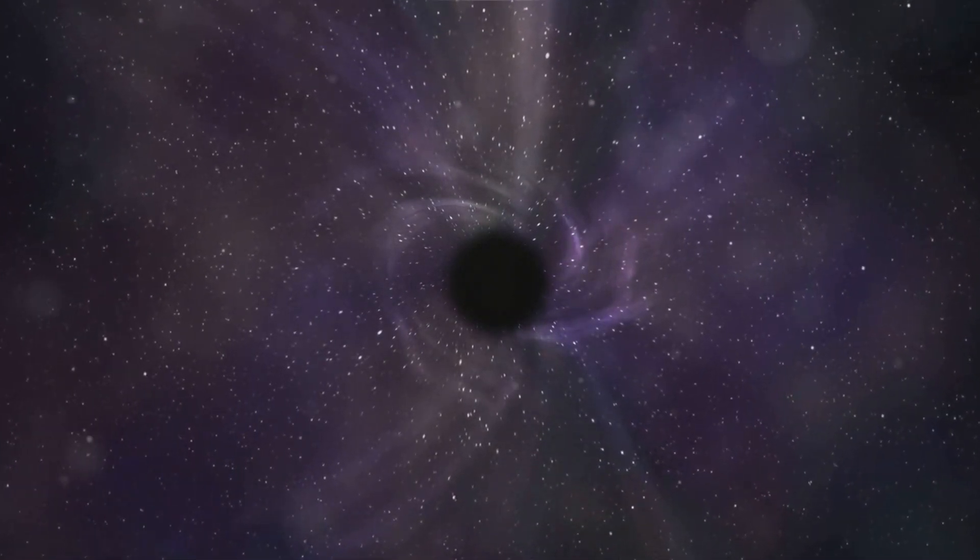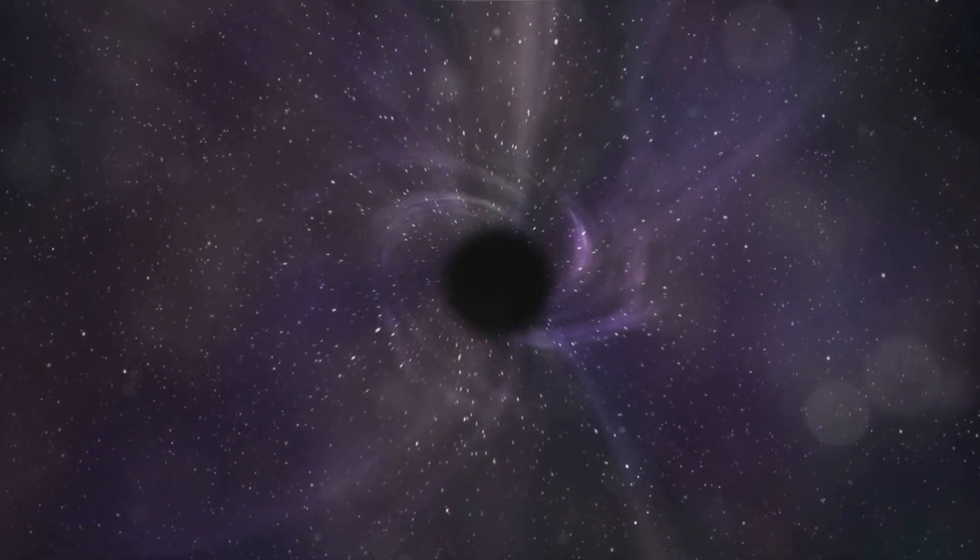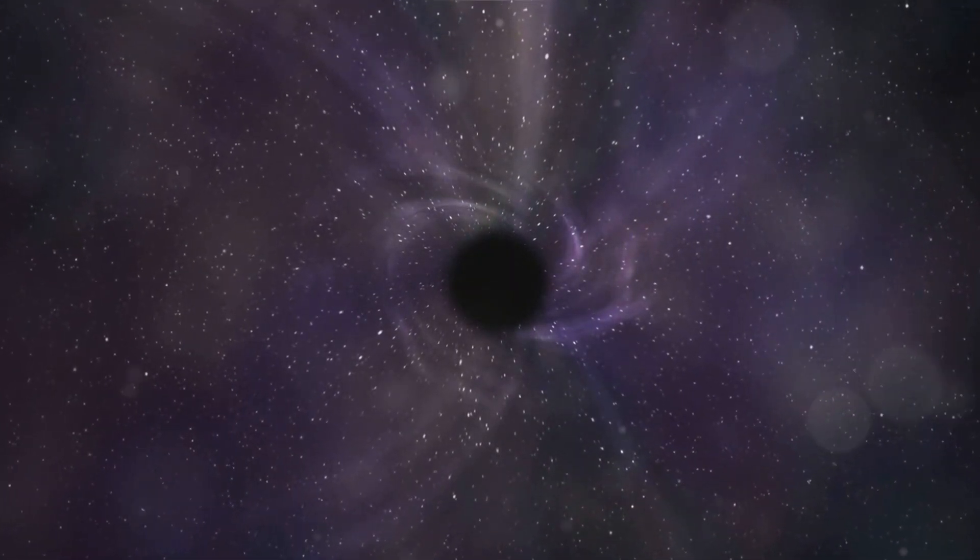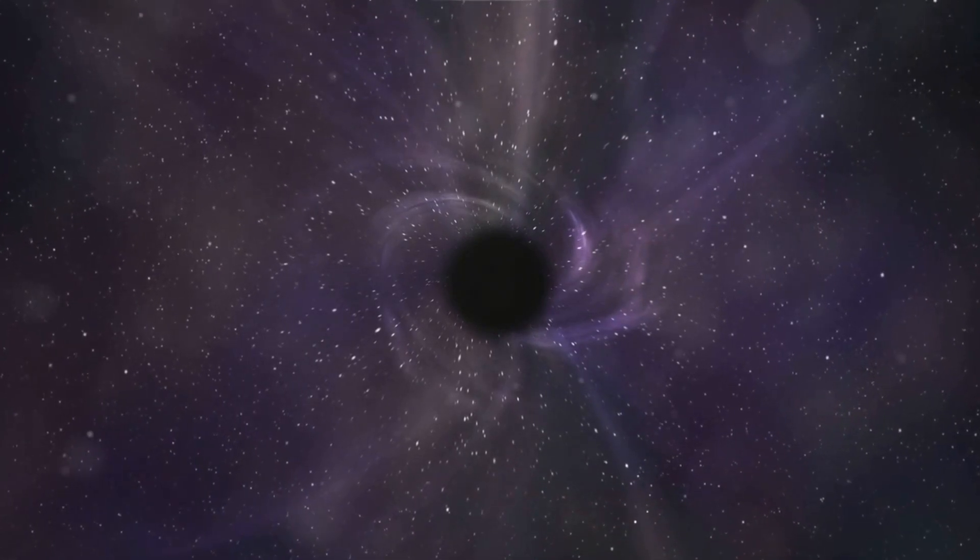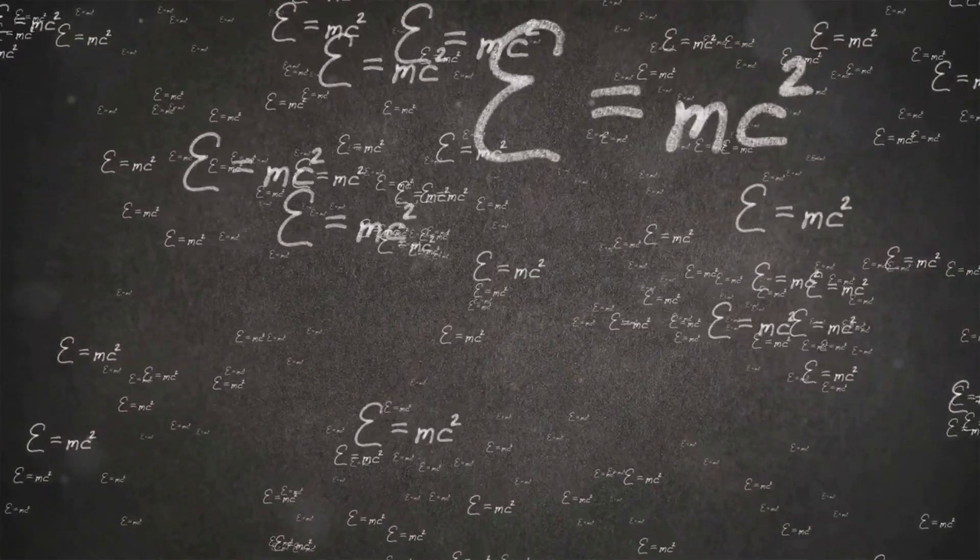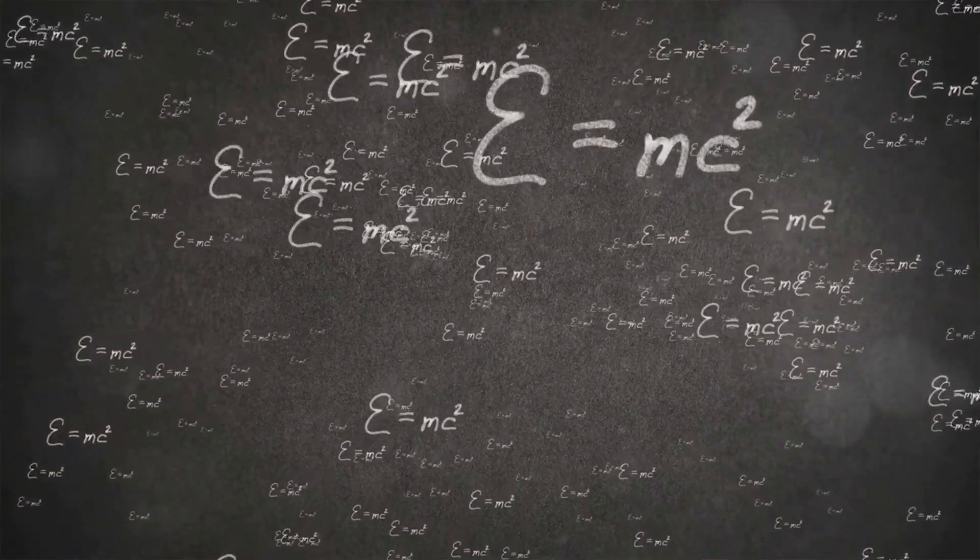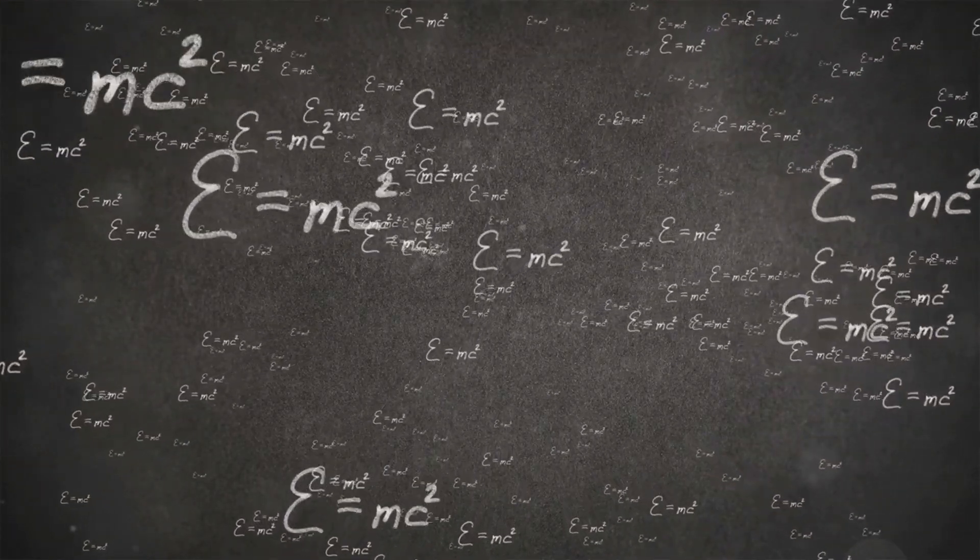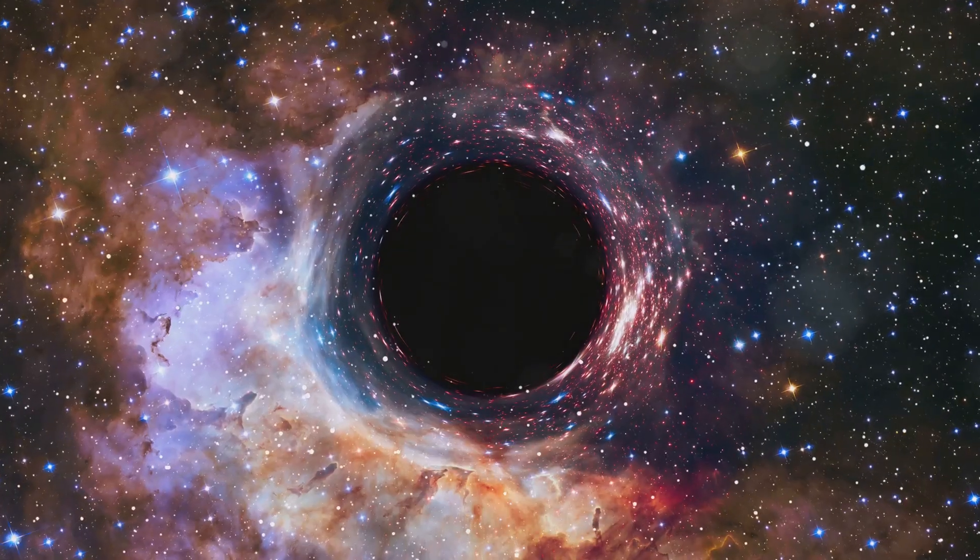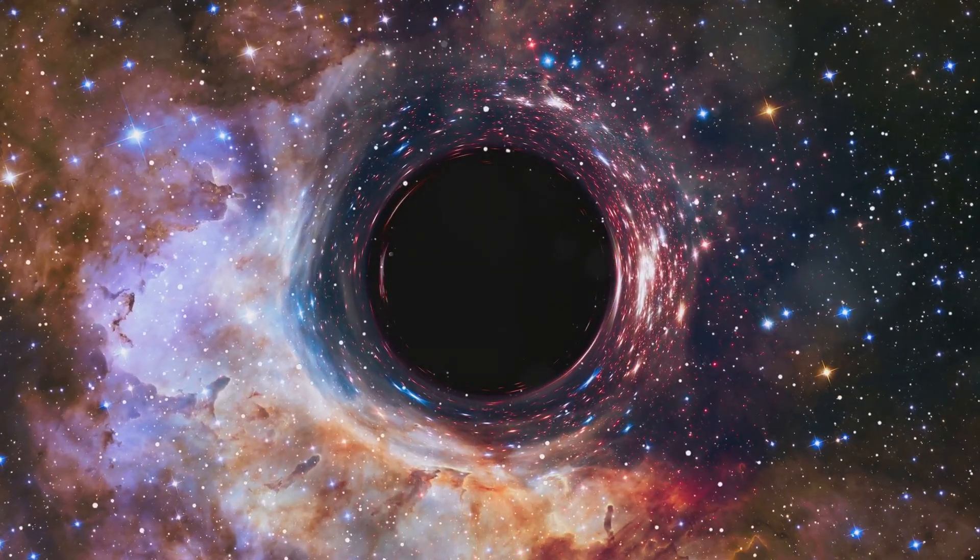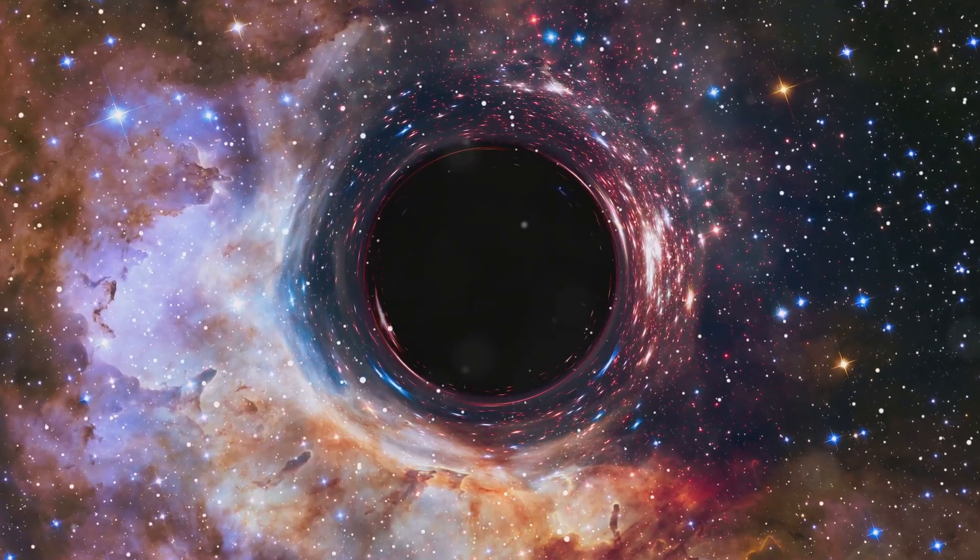So what exactly is the black hole information paradox and why is it so important? Well, imagine a place where the rules of physics as we know them break down, where everything we understand about the universe could potentially be turned on its head. This paradox isn't just a quirky cosmic puzzle—it's a fundamental conflict between our two best theories of reality: quantum mechanics and general relativity.